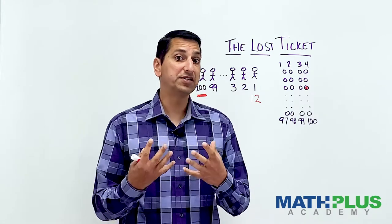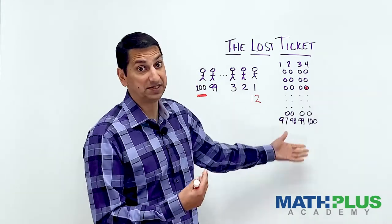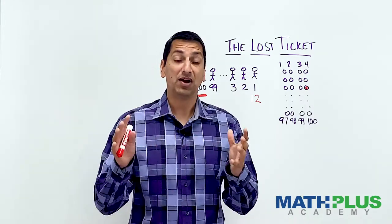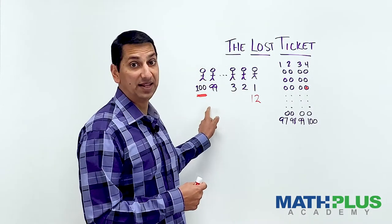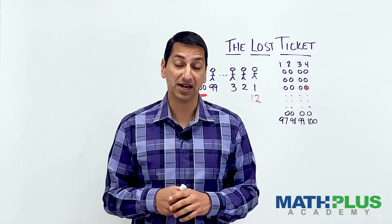So your challenge is under this scenario where the first person picks a seat at random and then everyone else tries to sit in their seat unless they can't. What are the chances that the last person gets their assigned seat?